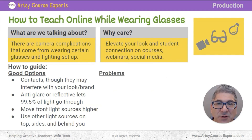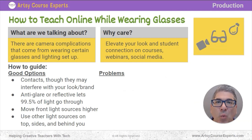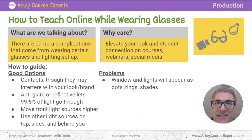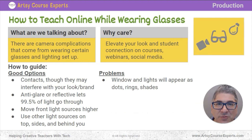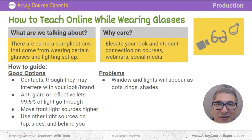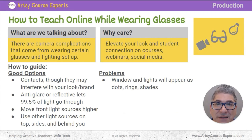Now there are a few problems with wearing glasses and lighting. First of all, windows and lights will appear as dots, rings, or shades right on your glasses. Pay attention — don't just start recording. Maybe check what you look like on camera first. If you have two windows in front of you, those may show up on your glasses. If you have windows behind you, they may be so powerful that they make you look dark.